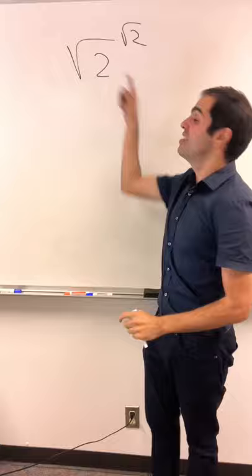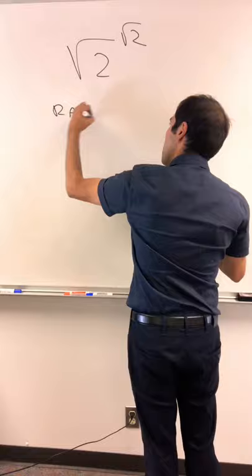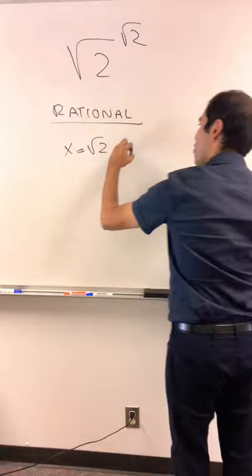Either this whole thing is rational, then we would be done, because let x be square root of 2, y be square root of 2, which are irrational numbers.